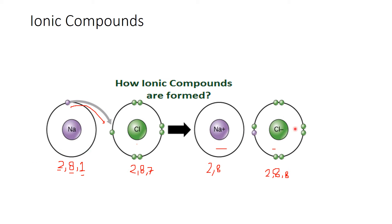Why do they have charges now? In the reactants, the number of protons and number of electrons are equal, so they are neutral. But when sodium loses one electron, the number of electrons is one less than the number of protons, so it becomes positively charged. In the case of chlorine, it gains one extra electron — the number of protons is still 17 but electrons become 18 — so it has one negative charge. The difference between the number of protons and electrons determines the magnitude of the charge.